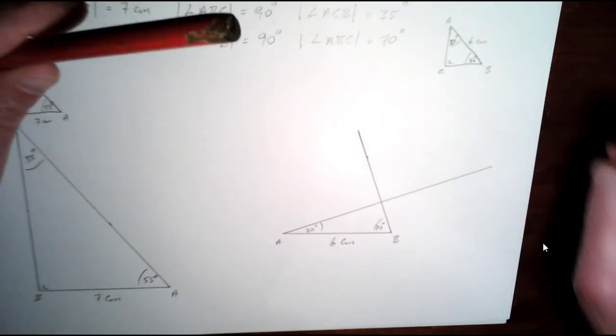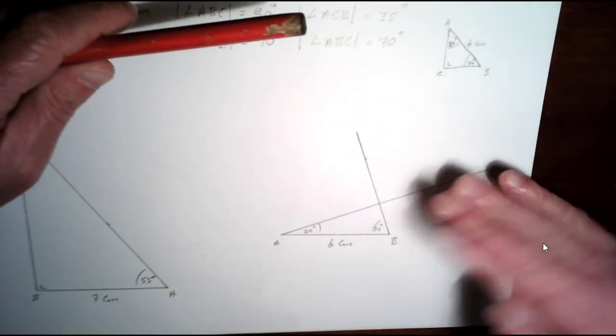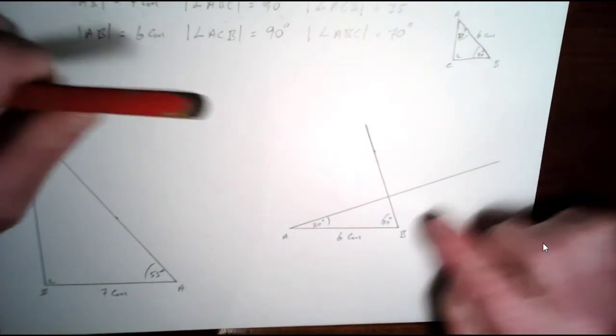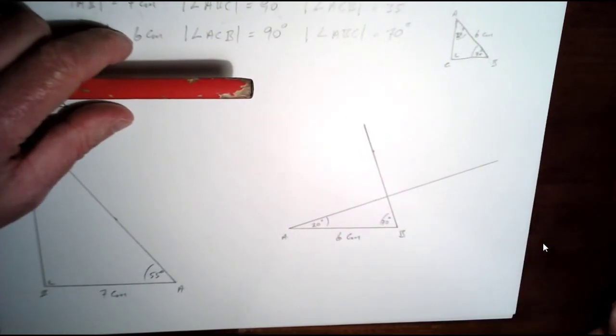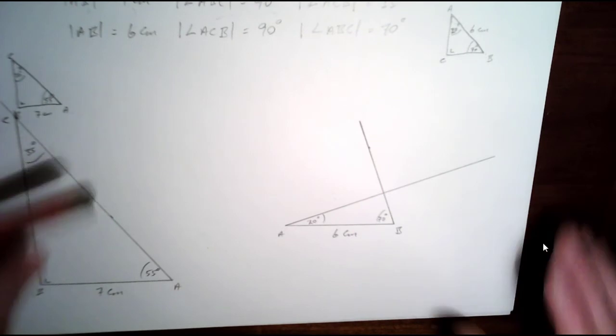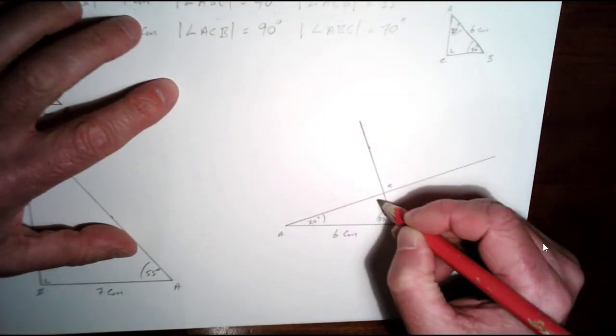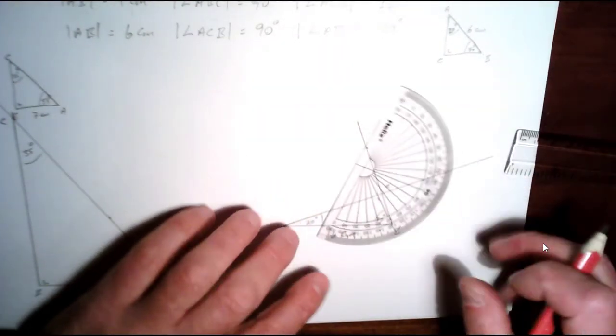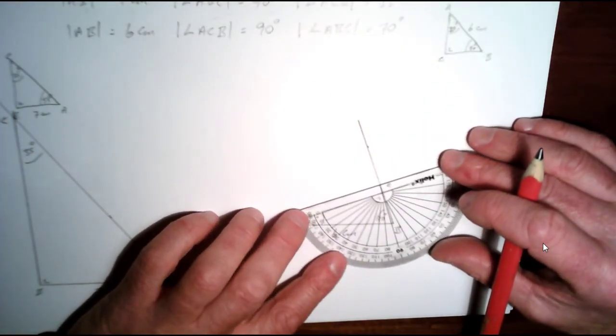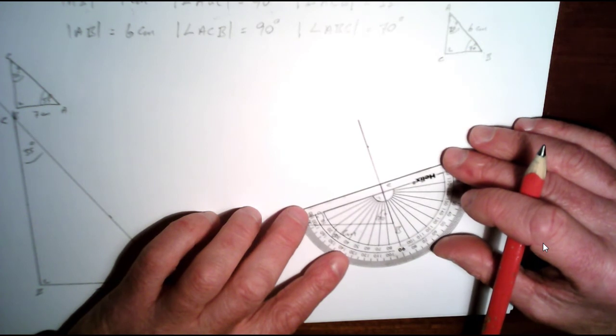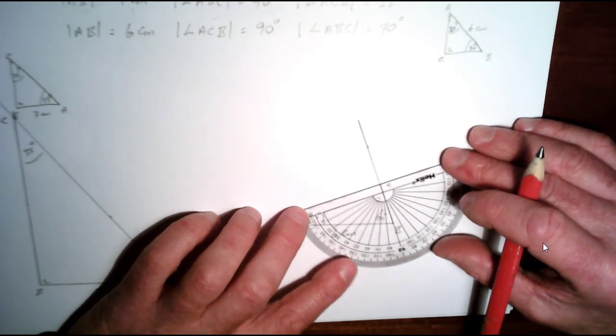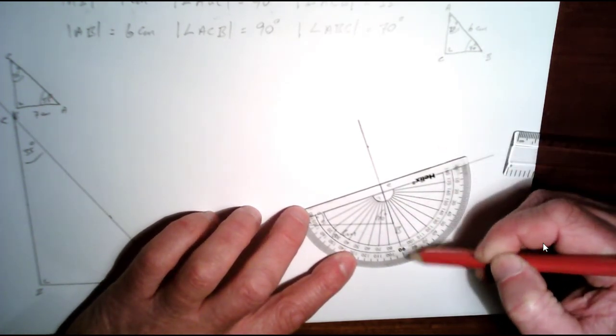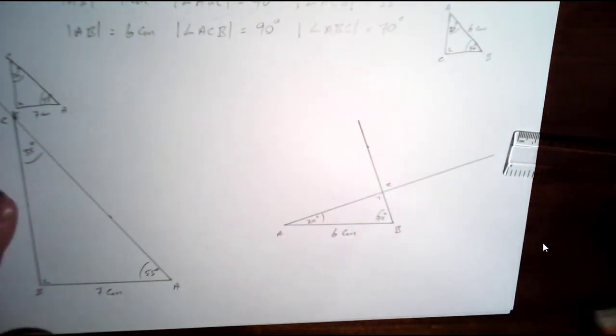Now, basically what I've done is I've kind of flipped this triangle over. So the 70 degrees is here and the 20 degrees is here. But it's the same triangle. Now this should be C here. And this should be 90 degrees. Let me just double check that with my protractor. So if I put the protractor here, you can see that this is 90 degrees down along here. So that's fine.